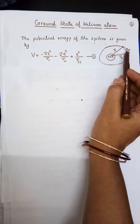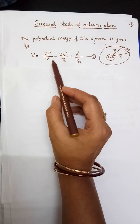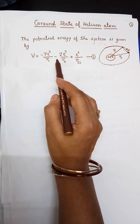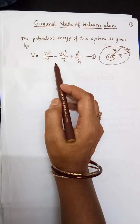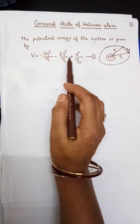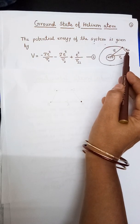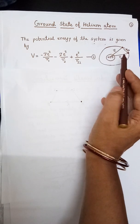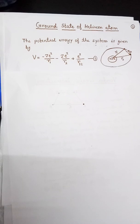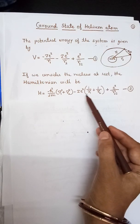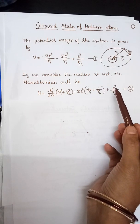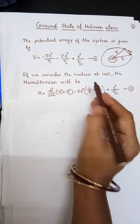The helium atom consists of a nucleus of charge +Ze surrounded by two electrons. The potential energy of the system is given by V = −Ze²/r₁ − Ze²/r₂ + e²/r₁₂, where r₁ and r₂ are the distances of electrons 1 and 2 from the nucleus, and r₁₂ is the separation between the two electrons. Considering the nucleus at rest, the Hamiltonian is H = −(ℏ²/2m)(∇₁² + ∇₂²) − Ze²(1/r₁ + 1/r₂) + e²/r₁₂, where Z is the true atomic number.